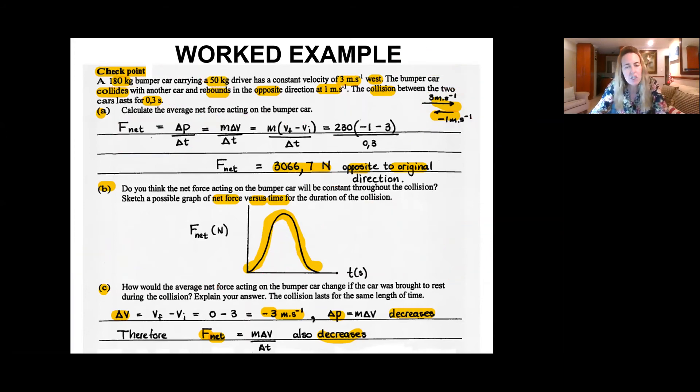And now how would the average net force in question C, how would the average net force acting on the bumper car change if the car was brought to rest during this collision and in fact did not rebound off at some other high velocity like in the original question. The collision lasts for the same length of time.